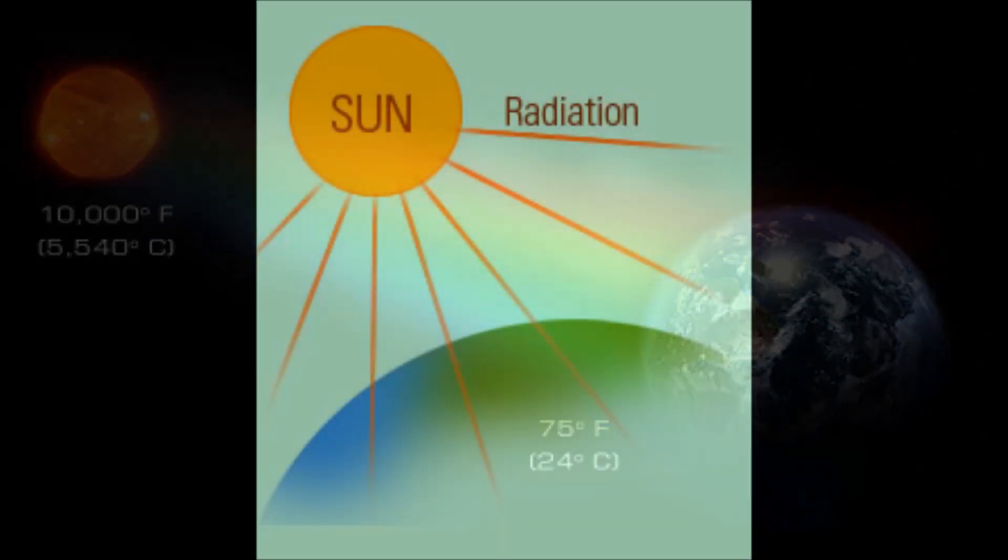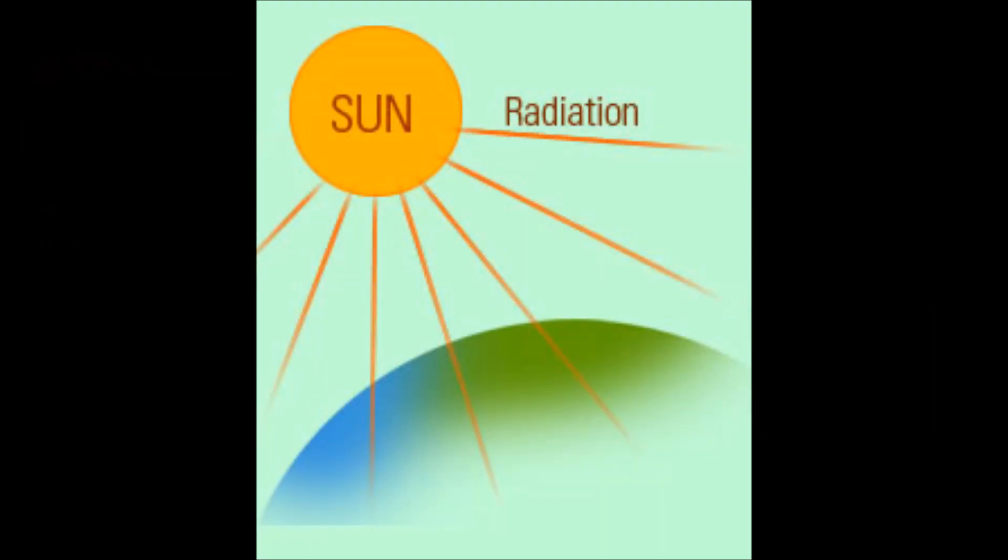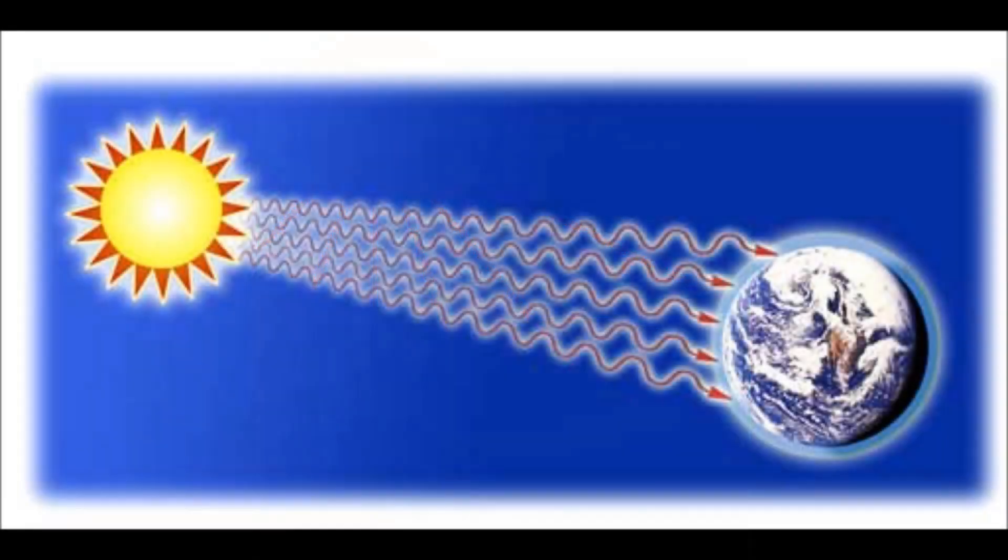This is why we can still feel the heat of the sun, although it is 150 million kilometers away from the earth. The hotter the object, the more it radiates. The sun obviously radiates off more energy than a hot mug of coffee.